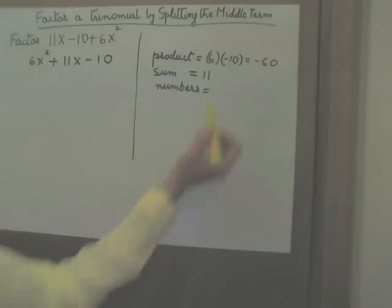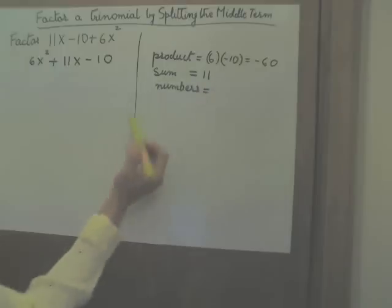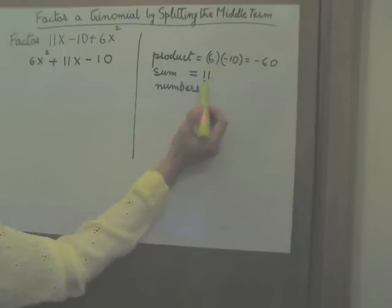Well, certainly if you multiply 6 and negative 10, we would get negative 60. But would the sum of these two numbers give me 11? If I add 6 and negative 10, I don't get 11, I get negative 4.